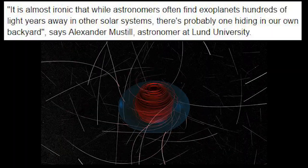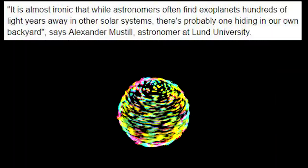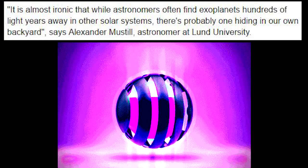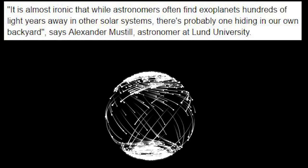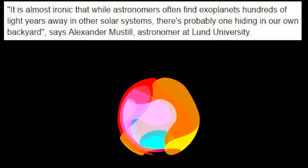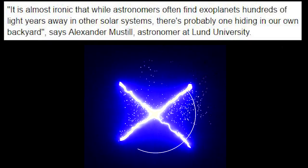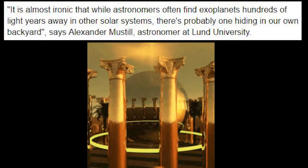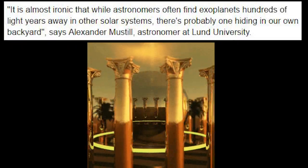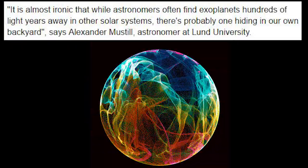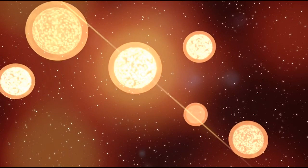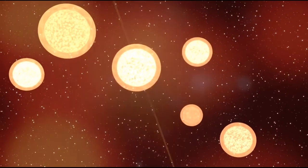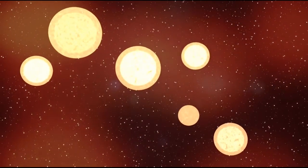This Planet Nine article wins the gold star for most cool sentences in an article. It is almost ironic that while astronomers often find exoplanets hundreds of light-years away in other solar systems, there's probably one hiding in our own backyard, says Alexander Mustil. Stars are born in clusters and often pass by one another. The galaxy is like a giant aquarium, and stars are giant magic fish that glow.